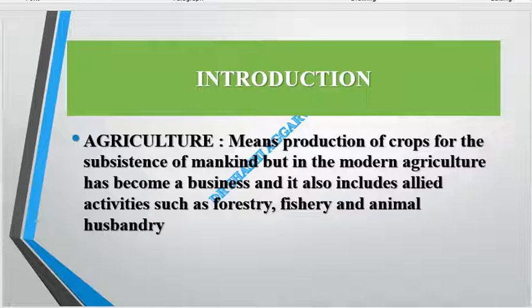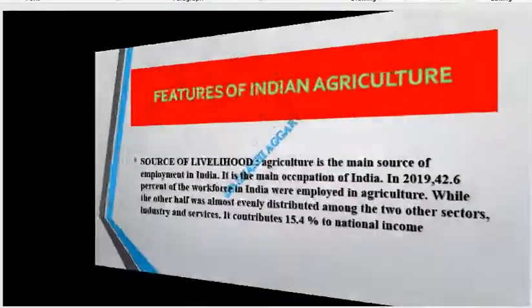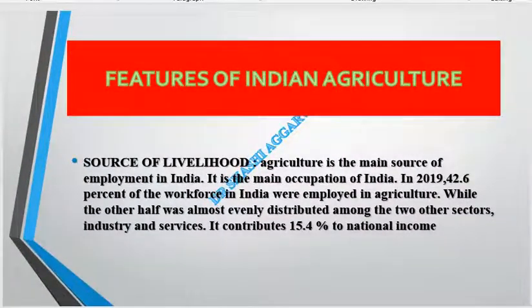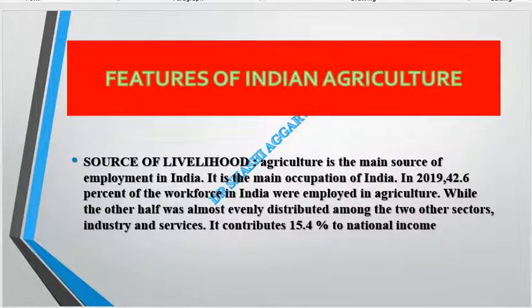And within this, allied activities such as forestry, fishery, and animal husbandry are also covered. Now we will understand the features of Indian agriculture.